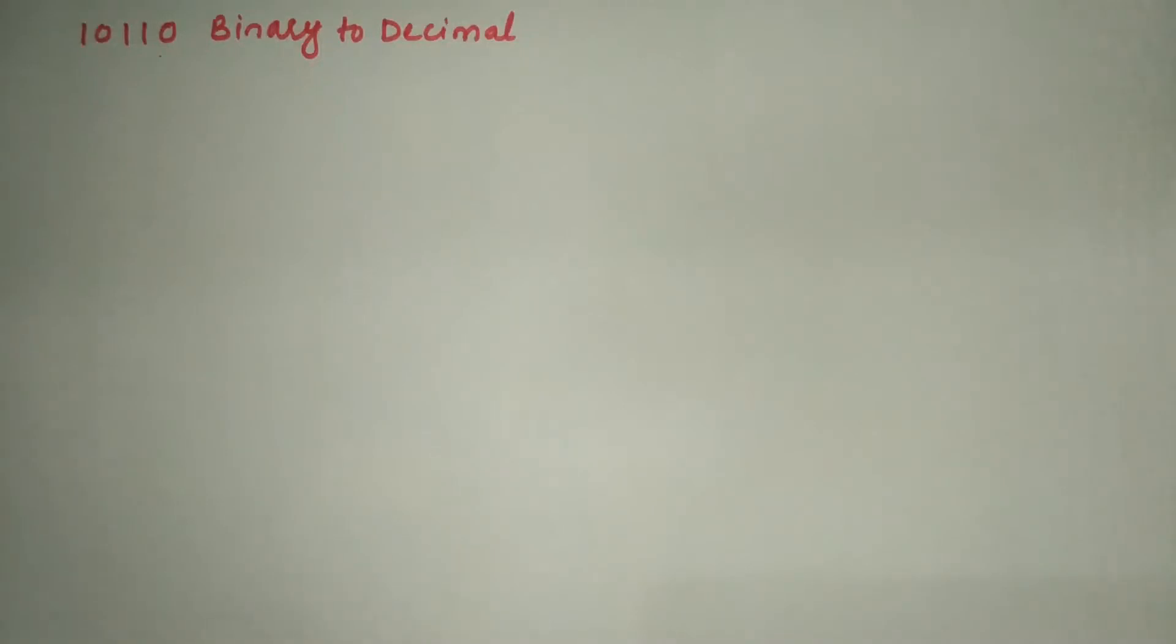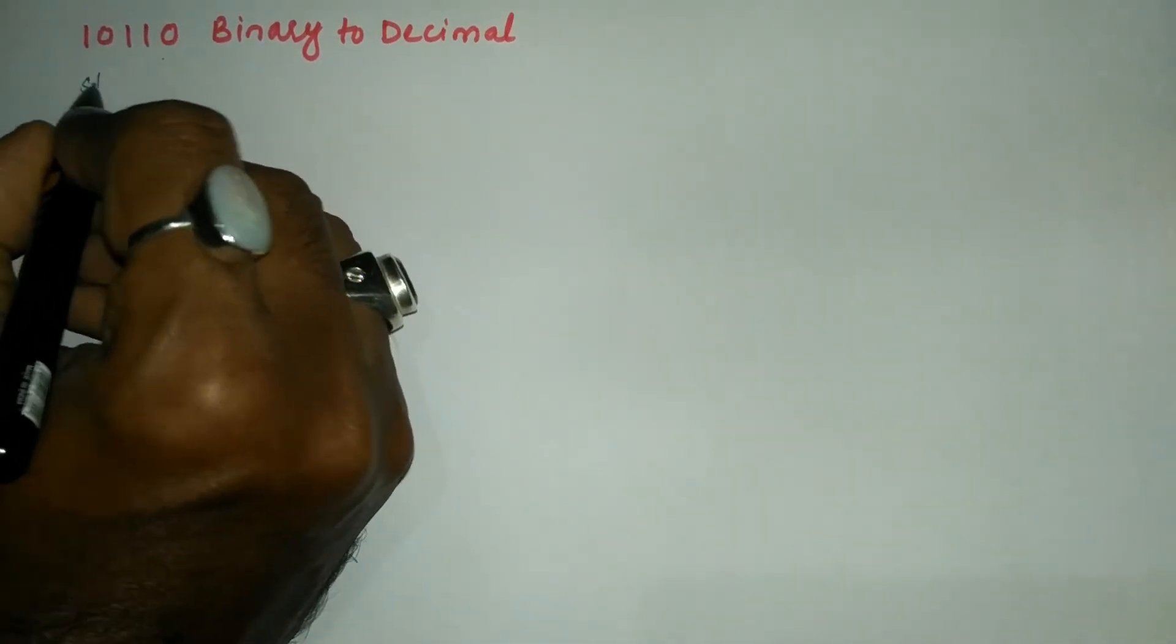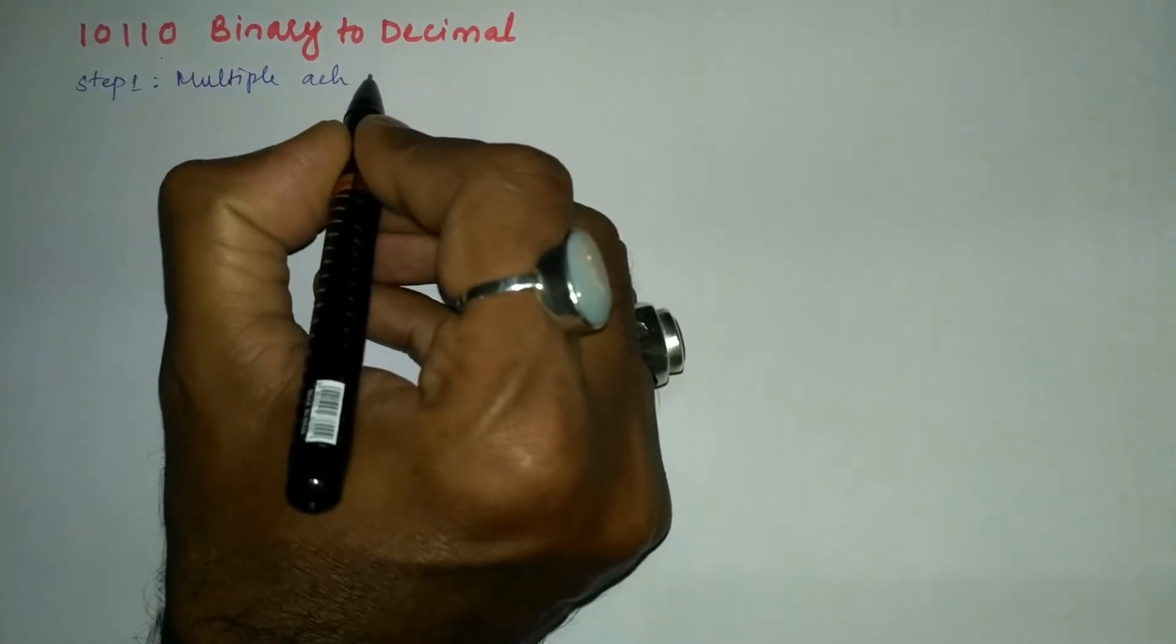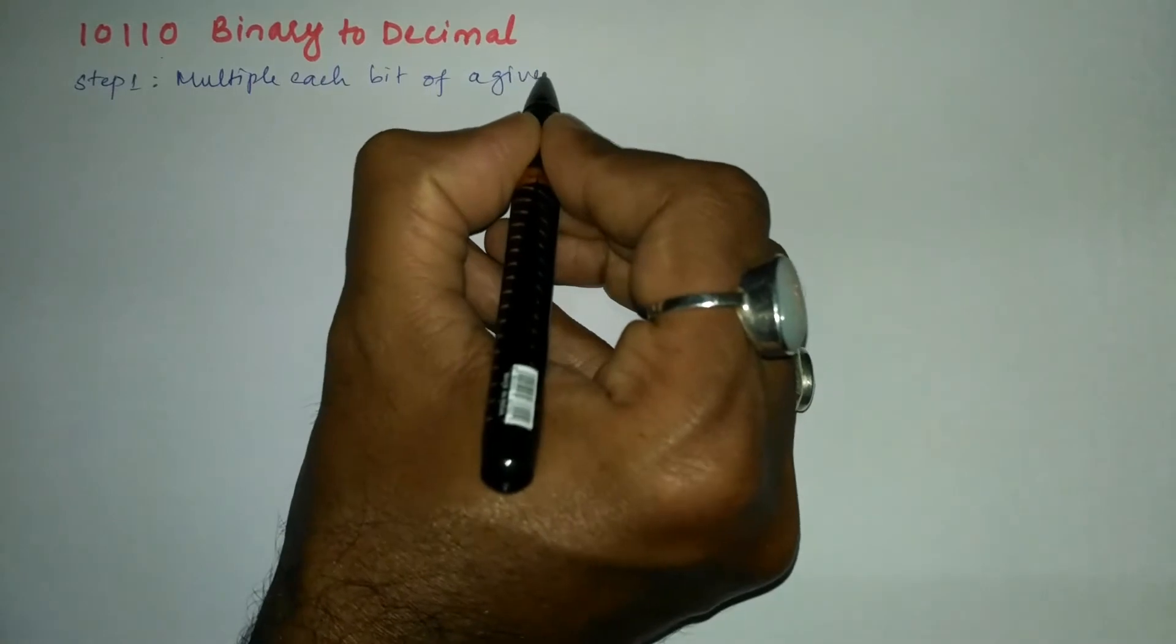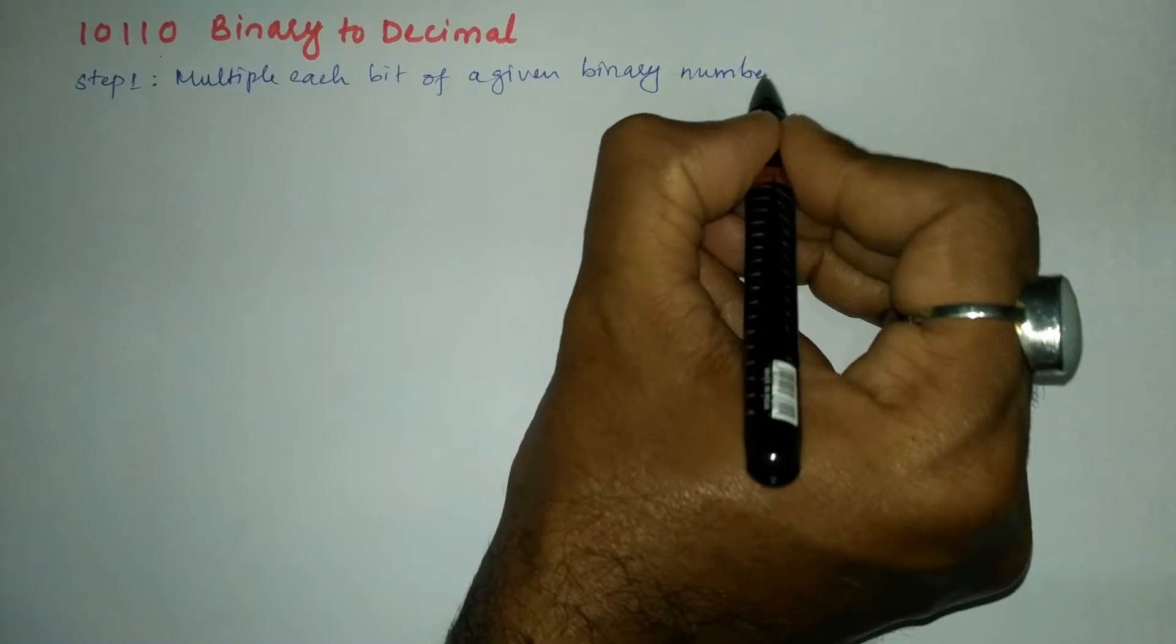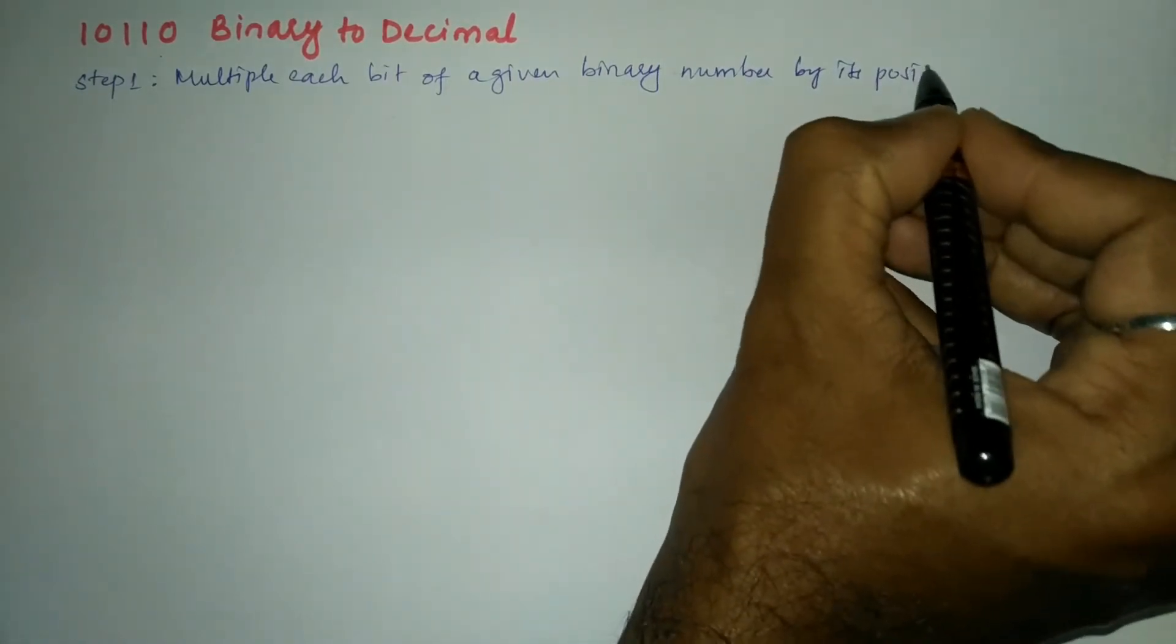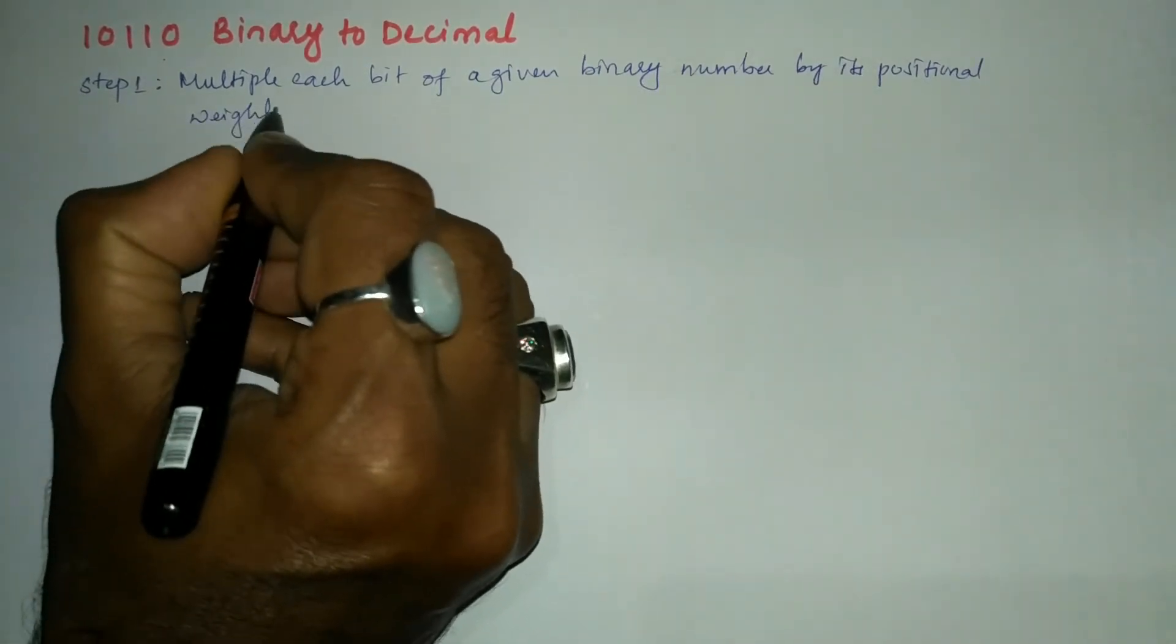Hello and welcome to Vision Academy. In this video we are going to convert 10110 binary to decimal. So let us write the steps. Step number one: Multiply each bit of a given binary number by its positional weights. Step...